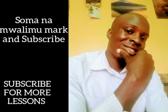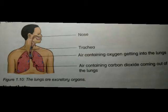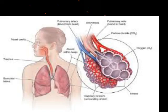The lungs are part of the breathing system. Air is taken into the lungs through the trachea. Oxygen is inhaled into the lungs and carried to all parts of the body. Cells use oxygen to produce energy and release carbon dioxide as a waste product, which is then breathed out.